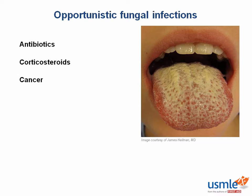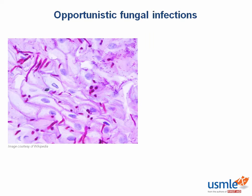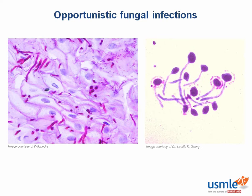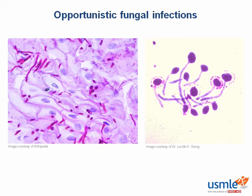Because Candida is a dimorphic species, at 20 degrees Celsius it appears as pseudohyphae and budding yeast. When Candida is grown in animal serum at 37 degrees, you see little germ tubes. These germ tubes are diagnostic for Candida albicans.